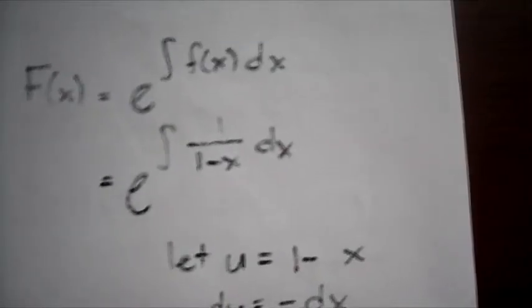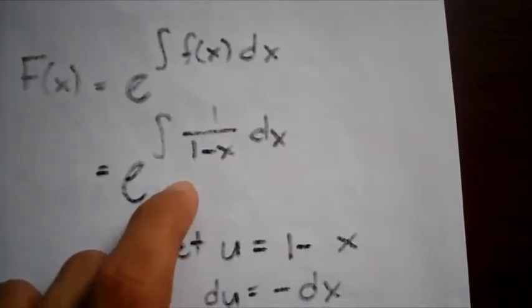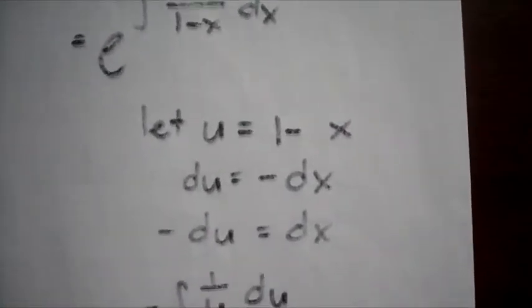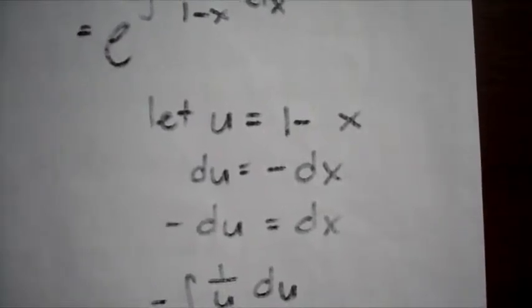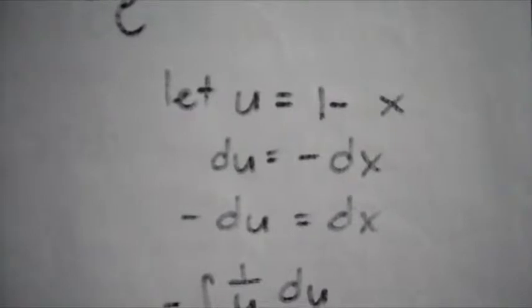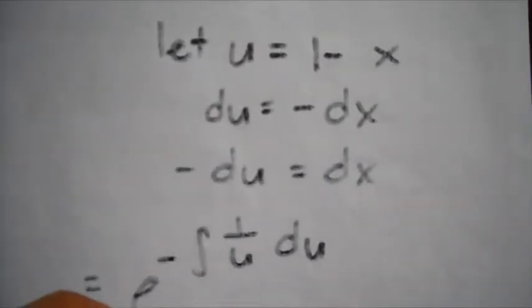Now to solve this we have to do some substitutions. So we let u equal to 1 minus x, and by differentiating it we get du equal to negative dx. And by multiplying it by negative 1 on both sides we get negative du equal to dx.